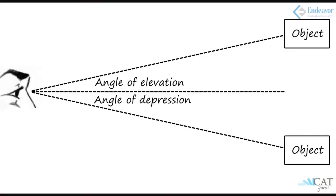Angle of elevation is when the vision is raised upwards and the angle is formed with the horizontal — that angle will be the angle of elevation. Similarly, when the vision is directed downwards, it will form the angle of depression.